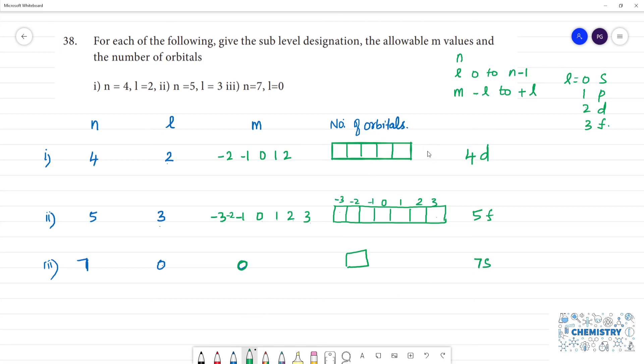So here number of orbitals is 5, here number of orbitals will be 7, here number of orbitals is 1. So number of orbitals is the m value.